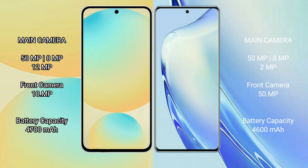Samsung Galaxy S24 FE features a 4600mAh battery with 25W fast charging support. vivo V27 also has a 4600mAh battery but with faster 66W fast charging support.